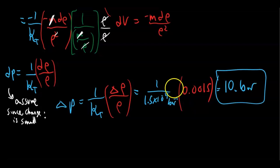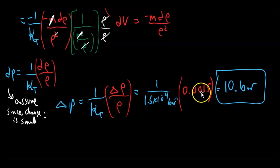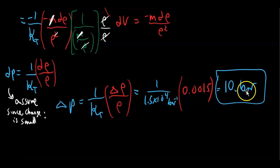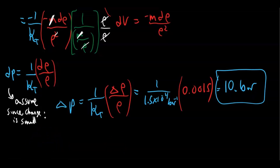So in order to change the density by 0.15%, we need to apply an additional 10 bar of pressure. Hope you enjoyed it. Cheers.